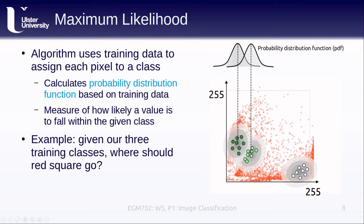Using this example, we can determine which class a pixel at the location of this red square should belong to. You can see it looks like it could belong to either the dark green or the light green class — the color level of the probability distribution is the same for each. If we extend a line from the red square, the probability of the pixel being part of the dark green class is just slightly higher, but it's pretty close. This might be an example of where we need more training data to calculate a better probability distribution, or it might be better to employ a different classification scheme, such as a fuzzy classification.